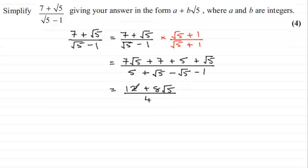Now you could divide 4 into both terms, or factor out 4 from the numerator: 4(3 + 2√5)/4. The 4s cancel, giving the final answer of 3 + 2√5.